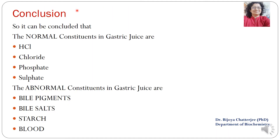In conclusion, after performing all the tests, the normal constituents found in the gastric juice sample were hydrochloric acid, chloride, phosphate, and sulphate. The abnormal constituents of gastric juice included bile pigments, bile salts, starch, and blood.